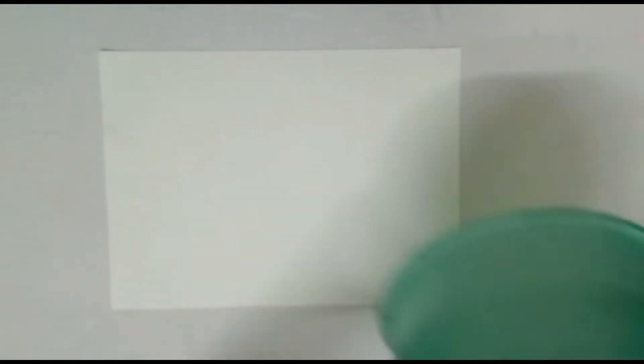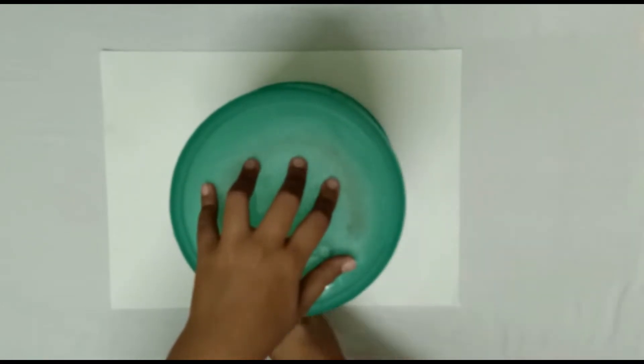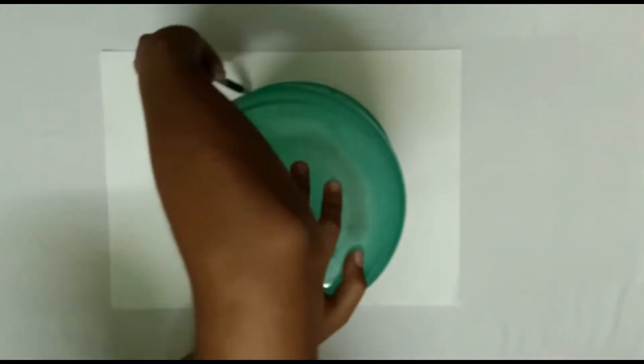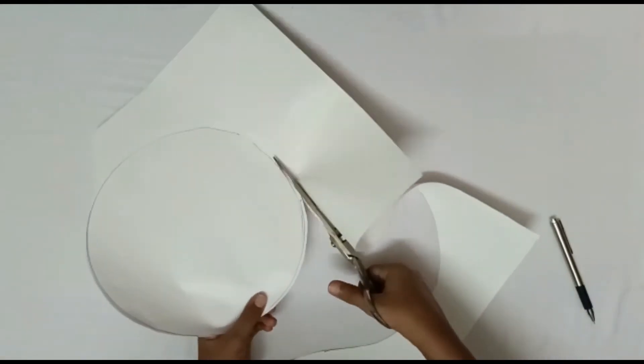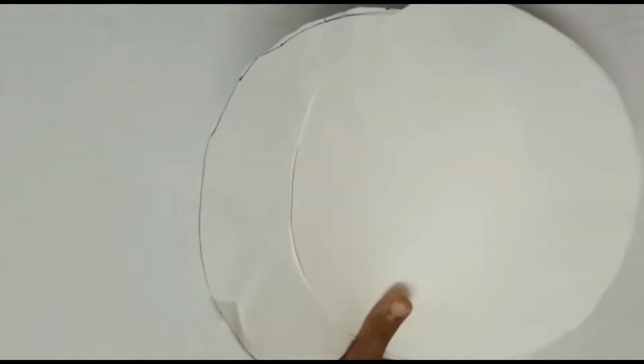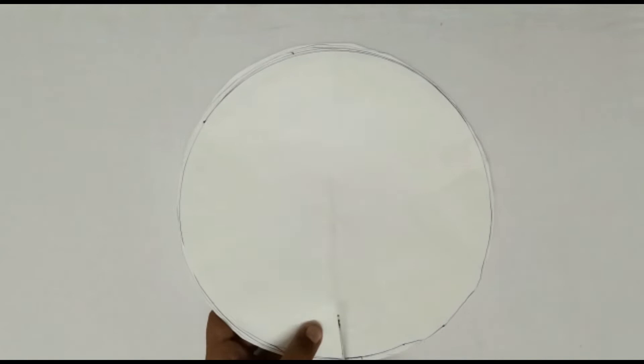Now take the A3 or drawing paper and the bucket and make an outline of the bucket. Now cut it through the outline. Now cut another circle of the same size. Now take the two circles and cut it from the middle.